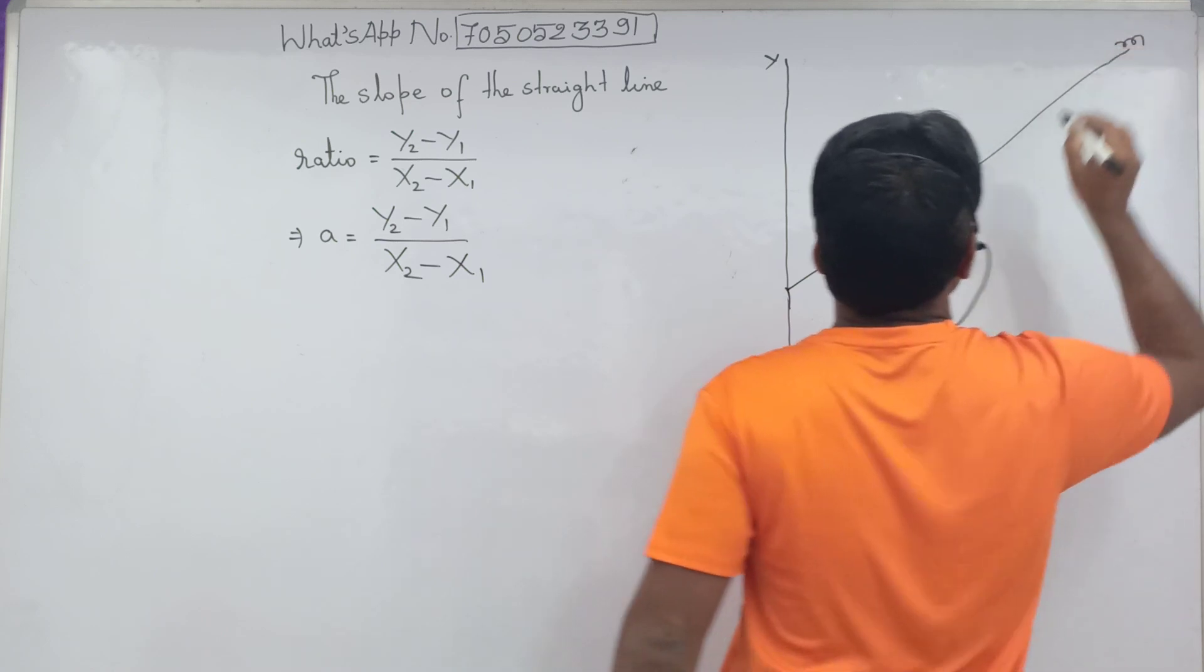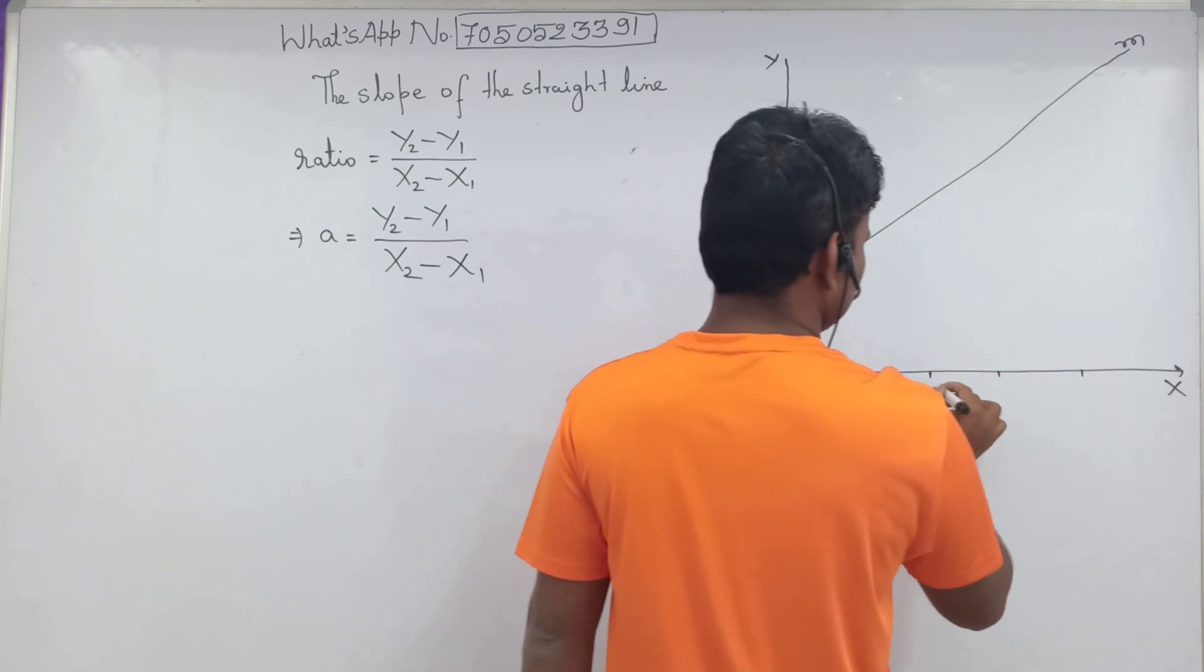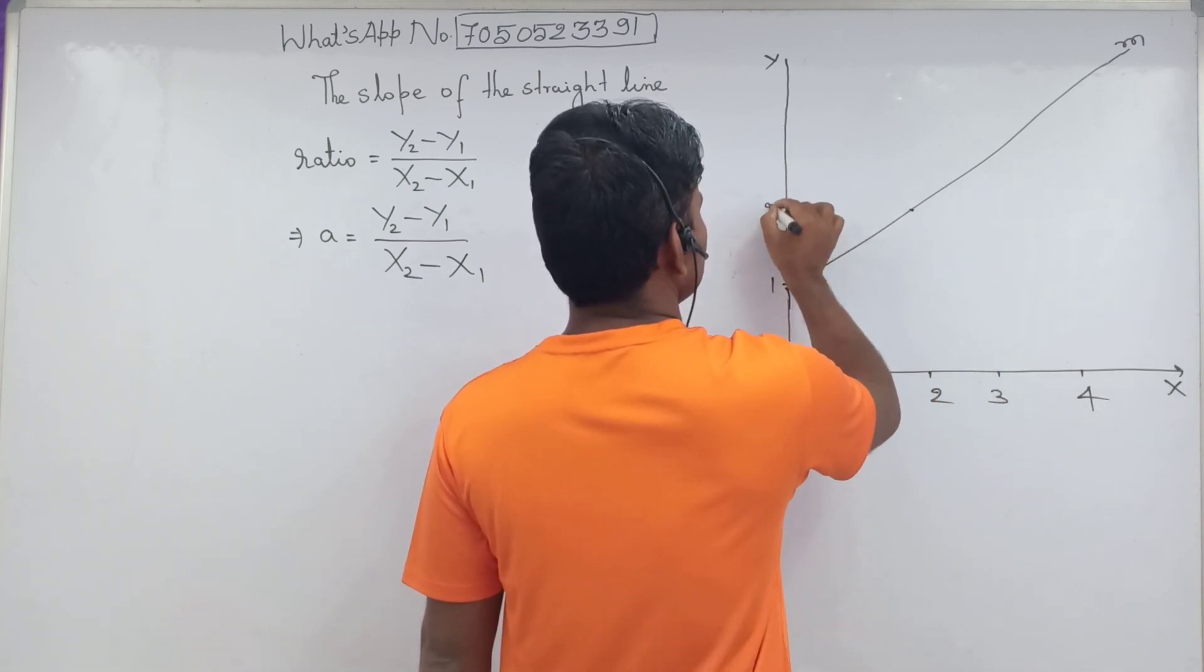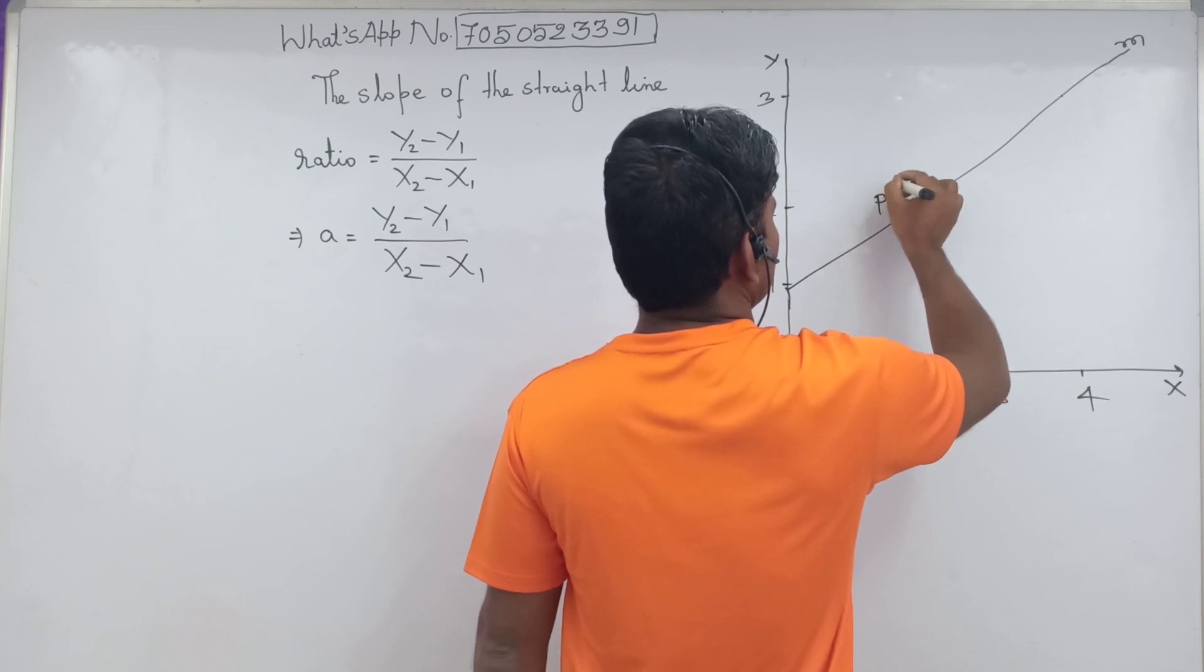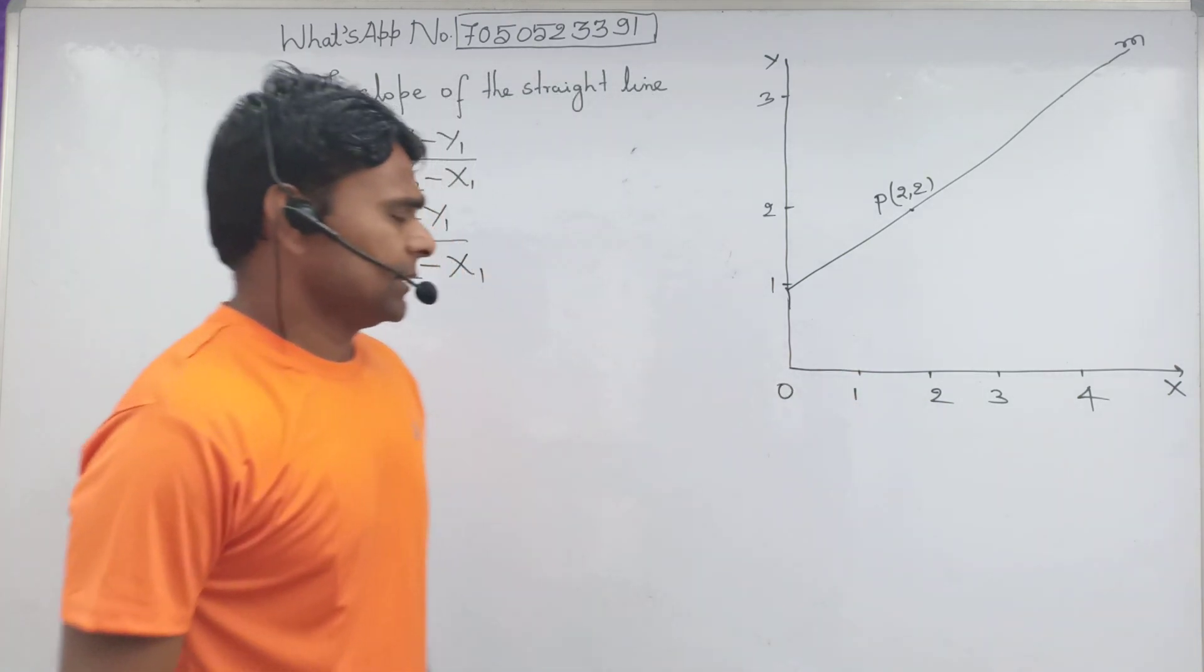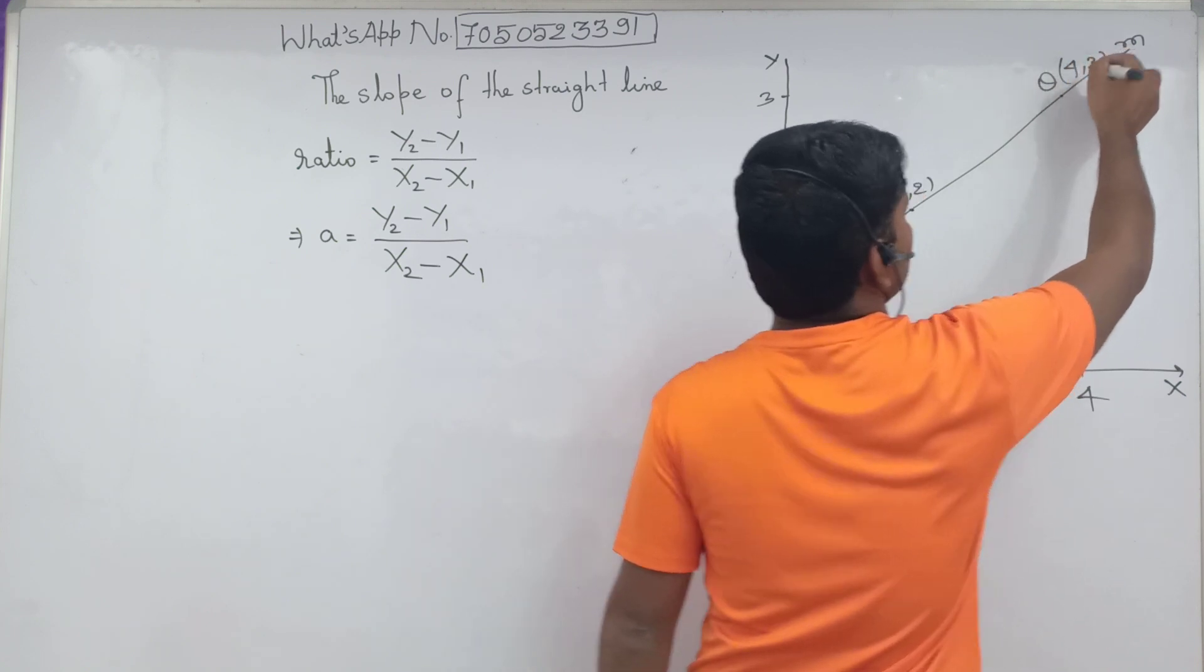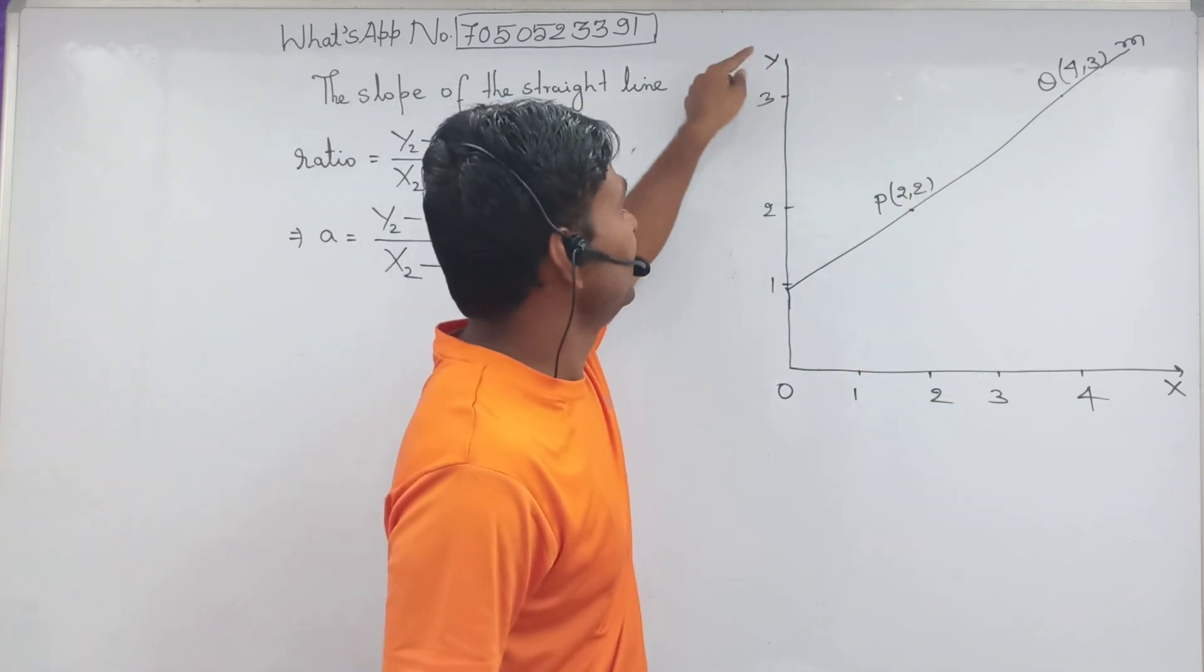Line M. 1, 2, 3, 4. P point whose coordinate is 2, 2. You can see P lies on x axis at 2 and y axis at 2. Q equal to 4, 3. Q lies on x axis at 4 and 3 on y axis.